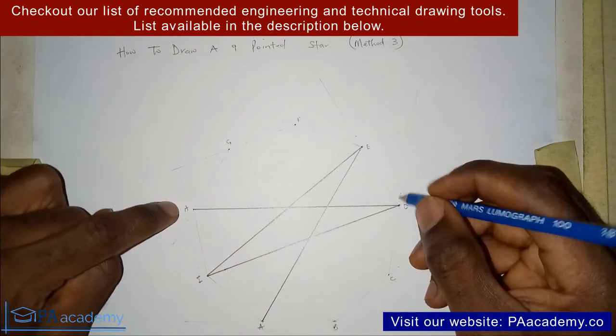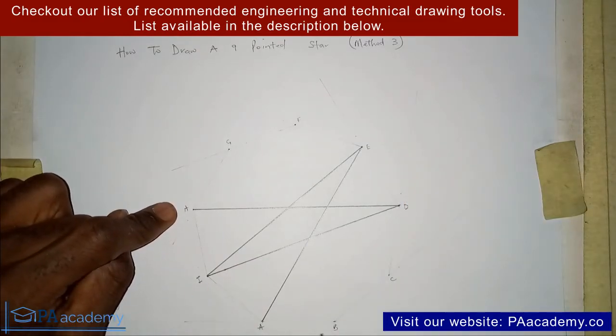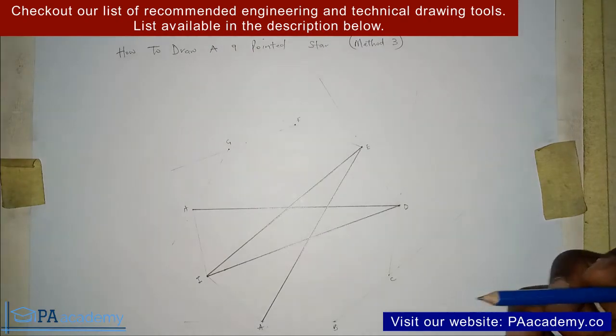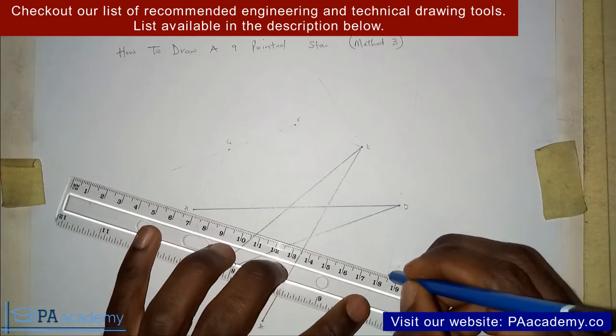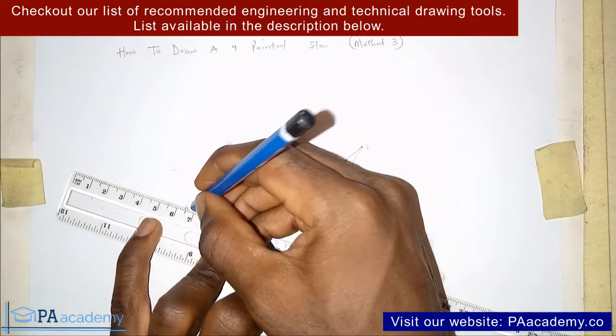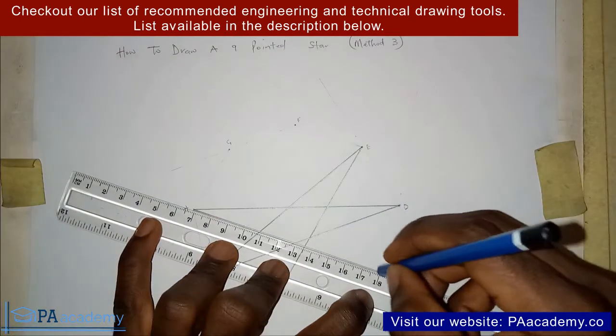Now from H, we stop at H. Then we are going to skip I, A, B. So from H, we are drawing it to C. We are going to continue like that in that order. You skip the next three and then you draw a line to the fourth one.